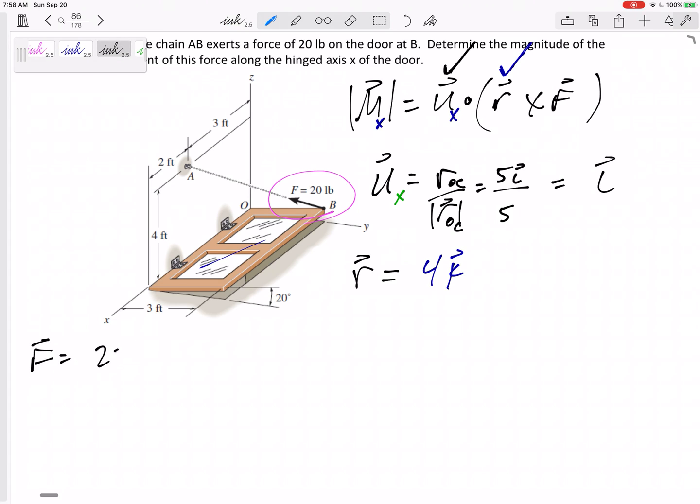So here, my force written as a vector would be 20 times—so I need an r, not any of the—not this r, not that r, not any of the r's I've already done. This is the r of the force, the line of action of the force. So it's kind of from B to A. From B to A. And so I just asked myself, how far does it go in the x? How far does it go in the y? How far does it go in the z? How far does that line of action go in the x direction?